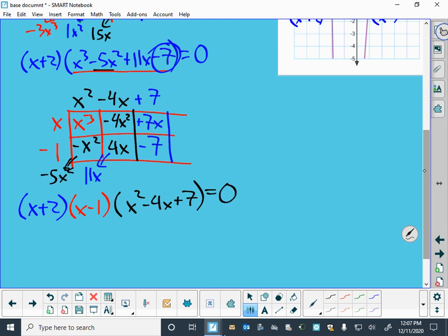all equal 0. So my zero product property, as I'm going along here, I know from this first part, to make this happen, either x plus 2 has to equal 0, or x minus 1 has to equal 0,